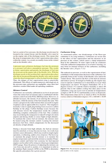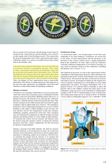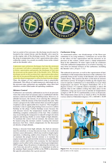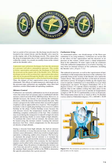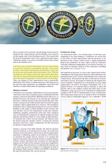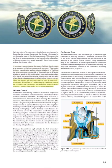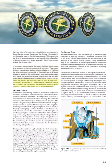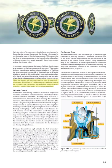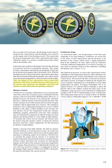A pressure-type carburetor discharges fuel into the airstream at a pressure well above atmospheric pressure. This results in better vaporization and permits the discharge of fuel into the airstream on the engine side of the throttle valve, where the drop in temperature is offset by heat from the engine. Thus, the danger of fuel vaporization icing is practically eliminated. The effects of rapid maneuvers and rough air on pressure-type carburetors are also negligible, since their fuel chambers remain filled under all operating conditions.